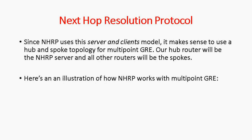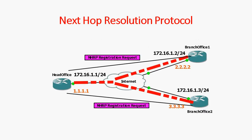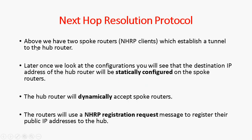Here is an illustration of how NHRP works with multipoint GRE. In this example scenario, branch office 1 and branch office 2 want to form a tunnel. Both branch office routers send an NHRP registration request packet to register themselves to the NHRP server with their public IP. We can see two spoke routers acting as NHRP clients establishing a tunnel to the hub router. The destination IP address of the hub router is statically configured on the spoke router, which I will explain during the configuration part.